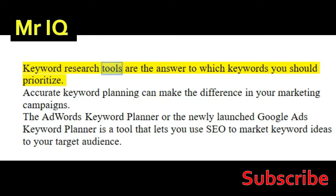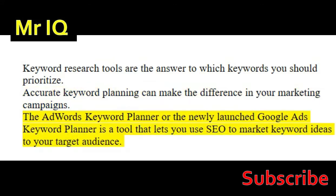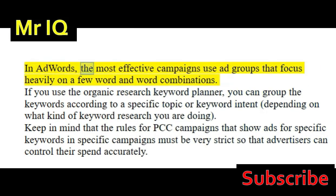Keyword research tools are the answer to which keywords you should prioritize. Accurate keyword planning can make the difference in your marketing campaigns. The AdWords Keyword Planner, or the newly launched Google Ads Keyword Planner, is a tool that lets you use SEO to market keyword ideas to your target audience. In AdWords, the most effective campaigns use ad groups that focus heavily on a few words and word combinations.